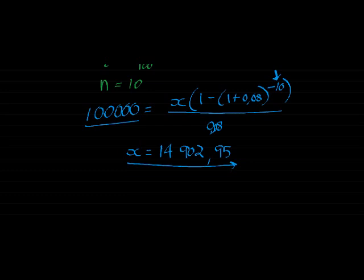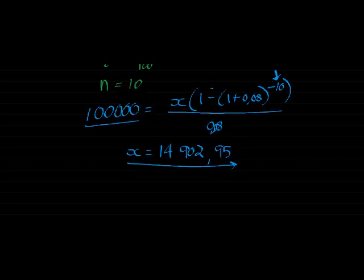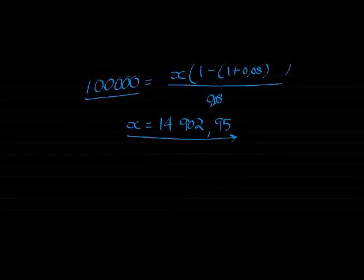If you multiply this by 10, it shows you how much is paid in total — 150,000. So the loan is actually costing him 50,000 in the long run.